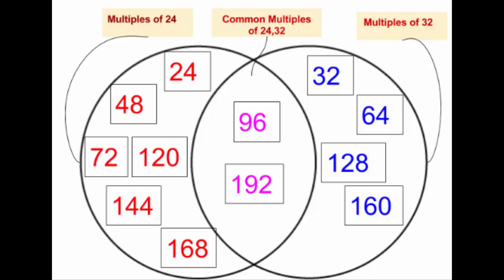We can also visualize this in a Venn diagram. Here we see that the common multiples of 24 and 32 are 96 and 192, and the smallest among these is 96. So we say that the LCM of 24 and 32 is 96.